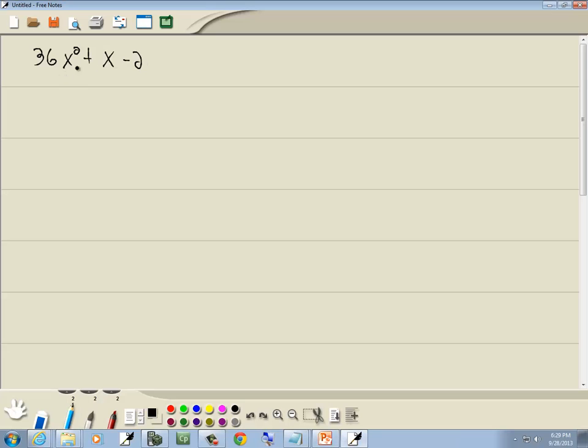Our first method is GCF, but these don't have anything in common. Grouping is four or more terms, that doesn't fit. PST is close, except there's a number in front of the x squared. So key number is the one we want to use.